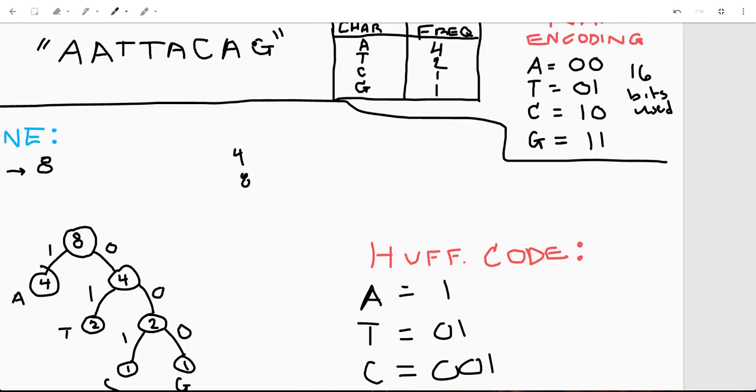So you're actually going to get eight plus six, which is 14. And that's a savings of two bits. Oh yeah. Saved two bits.